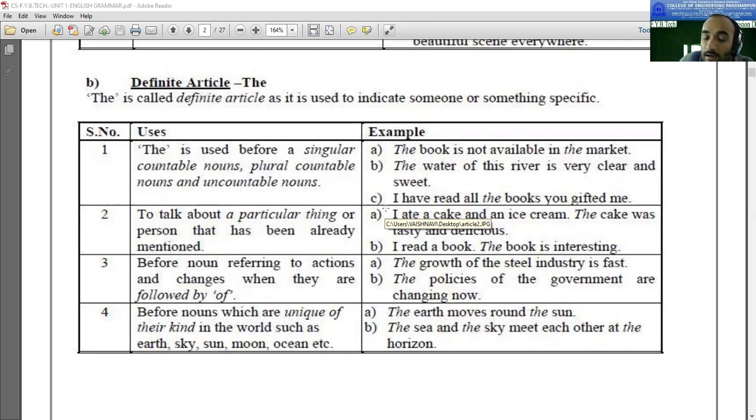The second one is the policies of the government are changing now. The policies of the government - we are talking about the policies, and after policies there comes 'of'. That's why 'the policies of the government are changing now'. That's why we are using 'the' as an article for the policies. Is it understood?